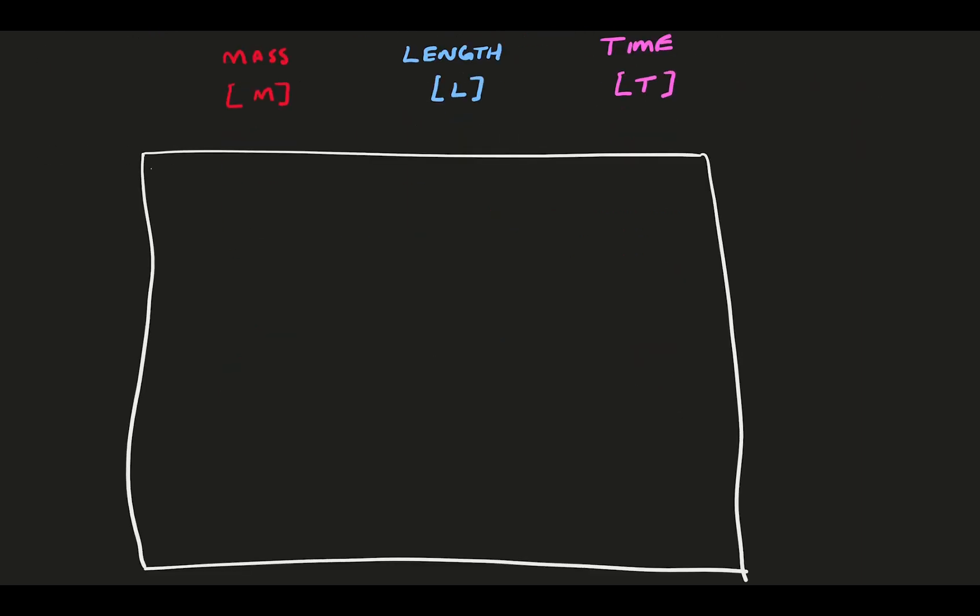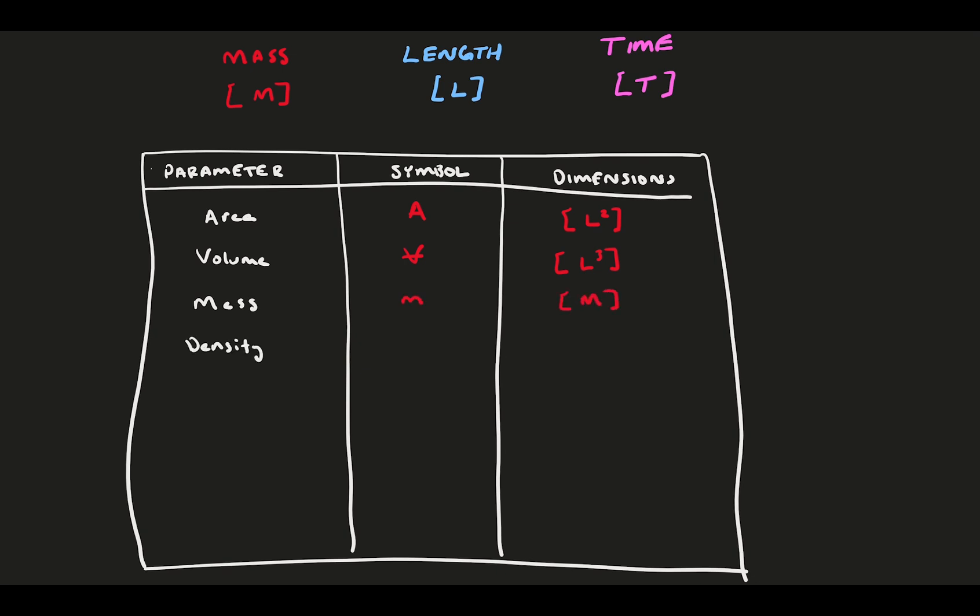There are a number of widely used parameters in fluid mechanics. Let's summarize them, their common symbols, and their base dimensions. This list of common parameters includes area, volume, mass, density, pressure, force, and dynamic viscosity. And finally, while I never use it in my videos, the kinematic viscosity is also quite common in fluid mechanics, which is really just the dynamic viscosity normalized by density. I prefer not to complicate things and stick with just dynamic viscosity.